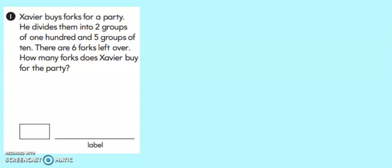So let's see what information we know. We know that Xavier puts them into two groups of 100. Now I'm going to use the space that I have to draw a quick picture. So he has two groups of 100. I decided to use my hundreds blocks for this. Next, it says he has five groups of 10. So I'm going to make five 10 sticks.